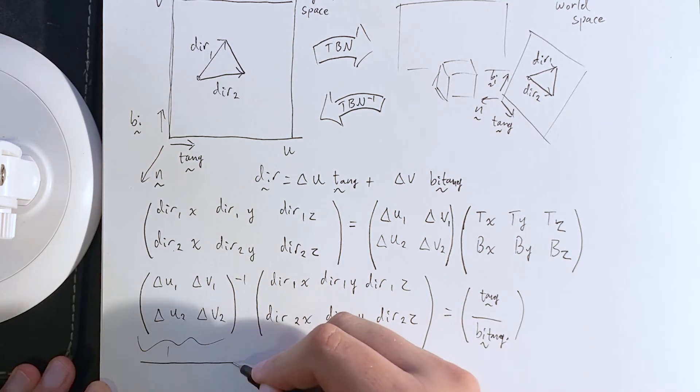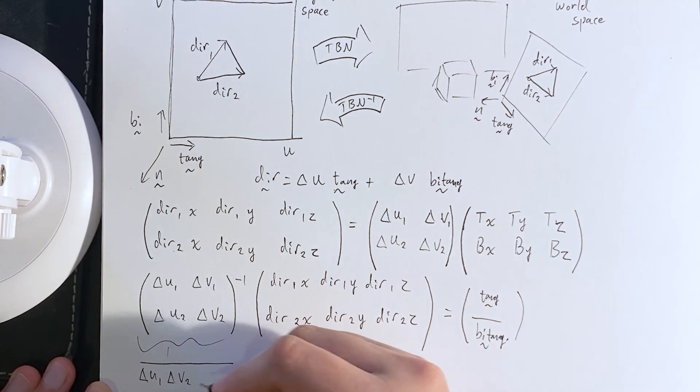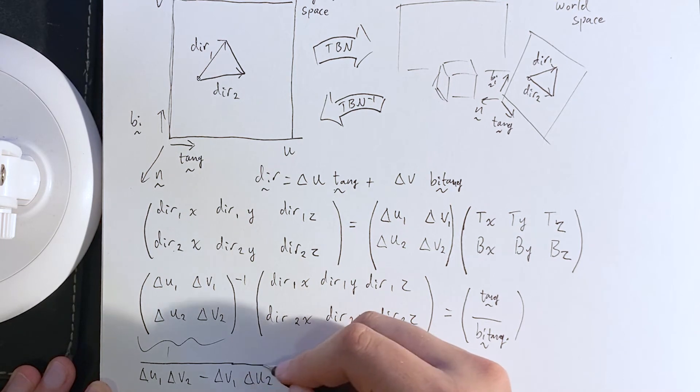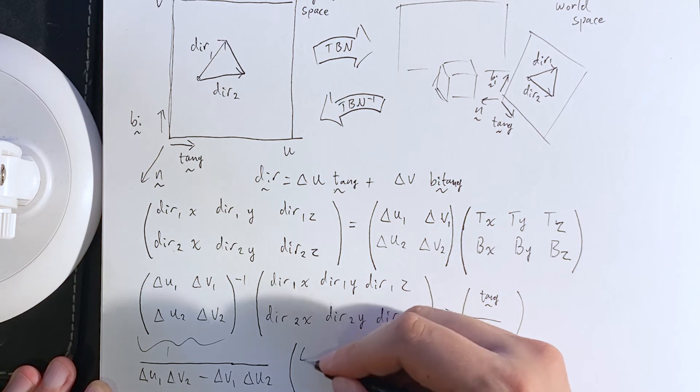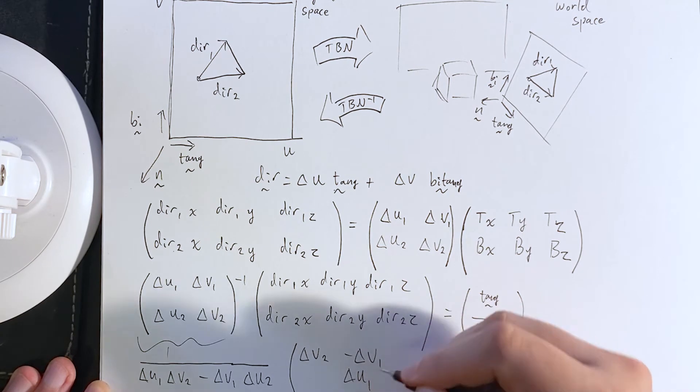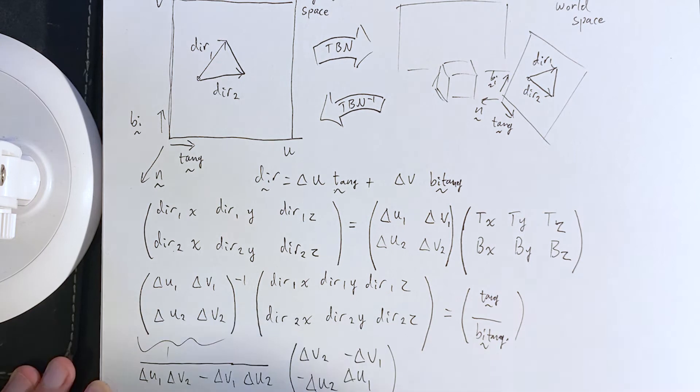we know how to get the inverse of a two by two. That is one over the determinant, and the determinant is the product of the leading diagonal minus the product of the off diagonal. And then we go ahead and swap the leading diagonal and negate the off diagonal. This should be familiar.